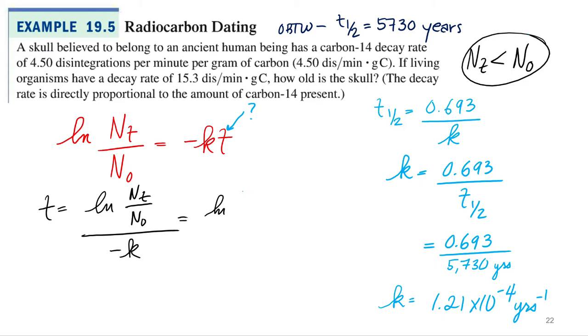So natural log of 4.5 disintegrations per minute per gram all over 15.3 disintegrations per minute per gram. And I can use those units because guess what? They just cancel out. All over negative k, 1.21 times 10 to the negative 4th inverse years.